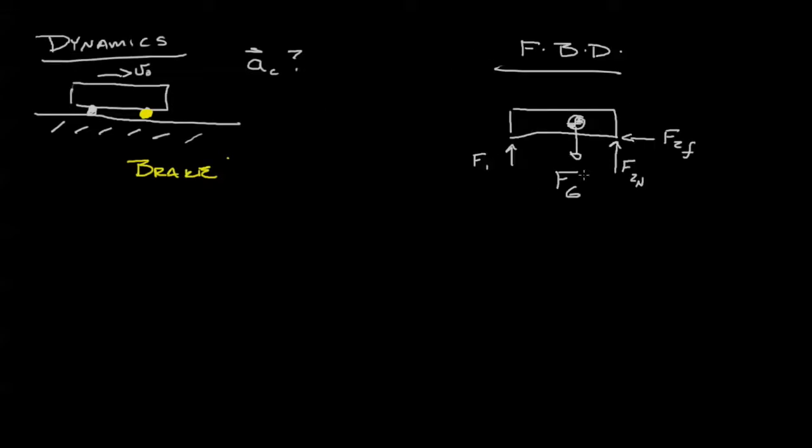And your free body diagram would look something like this. We have some sort of normal force at one, some sort of normal force at two, as well as some sort of frictional force at two. We have a force of gravity operating at the center of mass and we would combine all these to get some sort of linear momentum equation. Sum of the forces equals mass times acceleration.